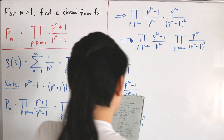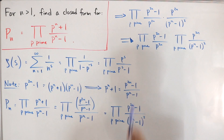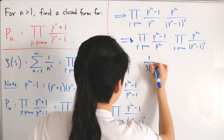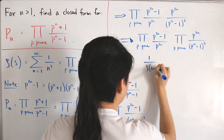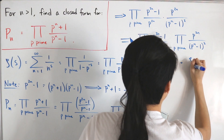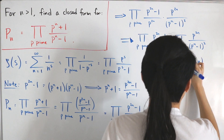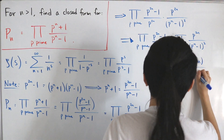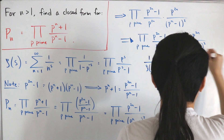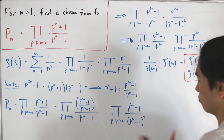Utilizing the Euler product definition of the Riemann zeta function, we can identify these products with the correct inputs: the first product equals 1 over ζ(2n), and the second equals ζ(n)². Therefore, the closed form for P_n is ζ(n)² divided by ζ(2n), and that is our final answer for n strictly greater than 1.